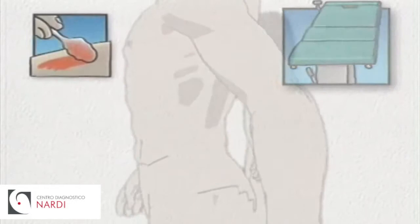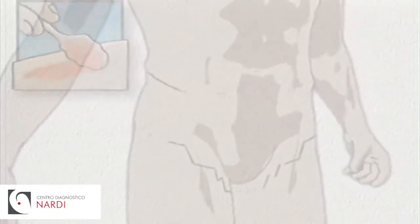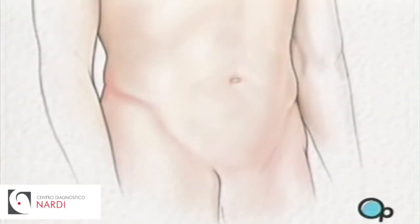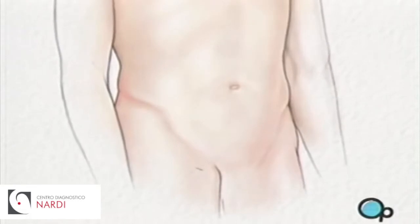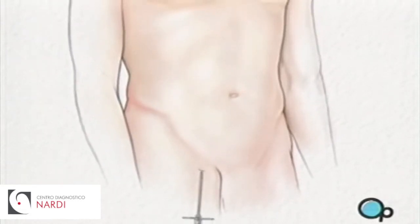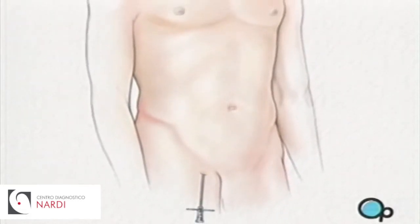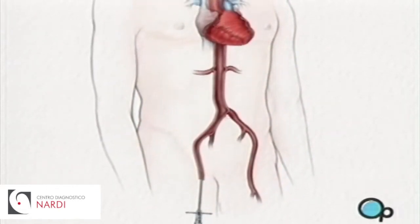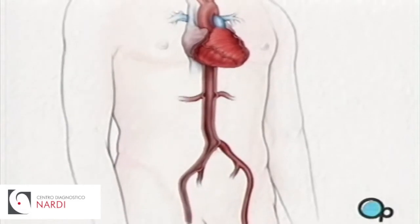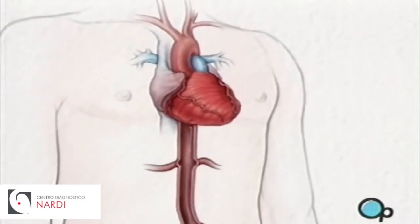To begin, your leg and groin are swabbed with an antiseptic solution. Then the doctor will make a small cut over the femoral artery in the upper part of the leg. A special needle is then inserted into the artery itself. Then a guide wire is carefully passed through the needle and gently pushed into the artery and upwards towards your chest.